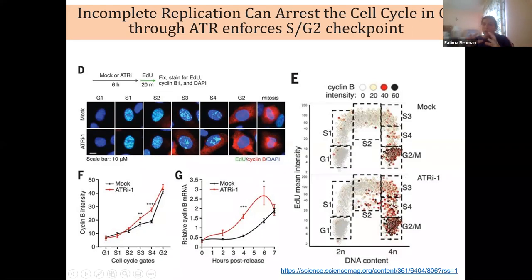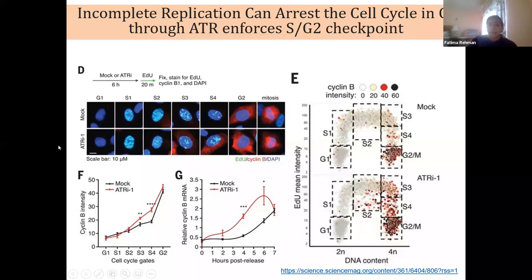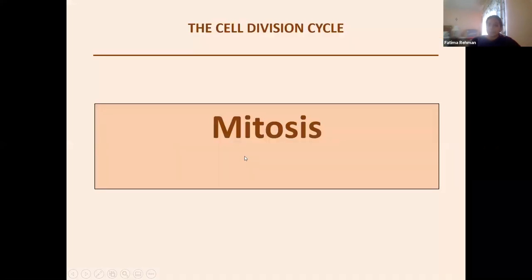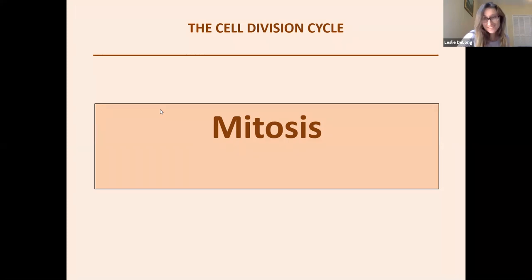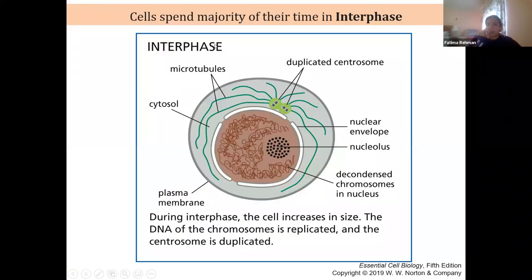Reviewing mitosis: the process produces two daughter cells. It starts with centrosomes duplicating to form the two poles of the spindle. In prophase, the mitotic spindle assembles, chromosomes condense with sister chromatids joined, and they bind to the mitotic spindle through kinetochores in prometaphase. In metaphase, chromosomes line up at the spindle equator. In anaphase, cohesin degradation triggers sister chromatid separation. Unattached chromosomes will prevent separation and cause the cell to stall in metaphase. Finally, new nuclear envelopes reform in telophase.